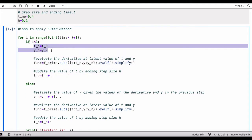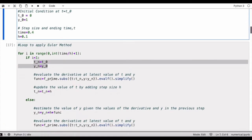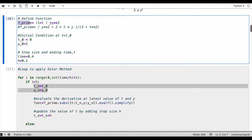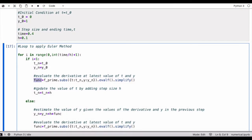What it does is it assigns t_n and y_n at their initial values which we have already given here. Then given the initial values we evaluate the derivative at its value of t and y, so we substitute t equals t_n and y equals y_n in the derivatives that we have defined here and that gives us the value of the function f. Then we update the value of t by adding the step size, so t_n is now equals to t_n plus h.